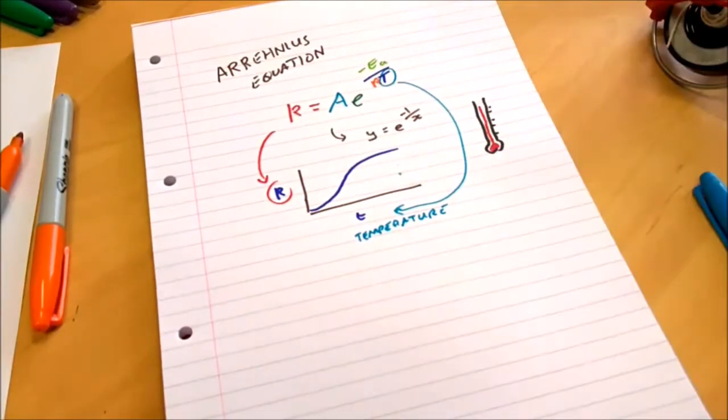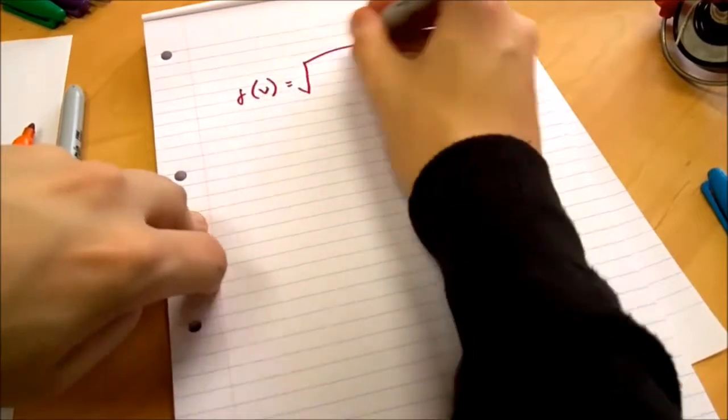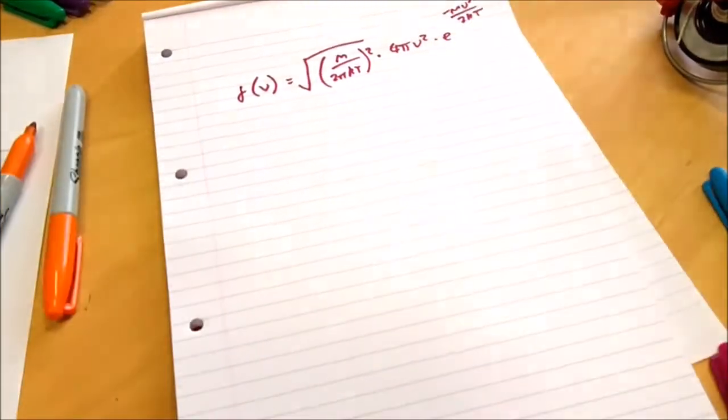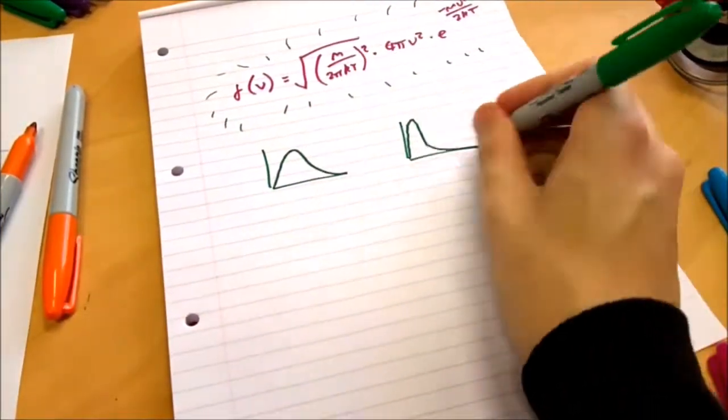We'll look at the Maxwell-Boltzmann equation for energy distribution of molecules, and break down exactly how all that mathematical notation converts to a human-readable graph.